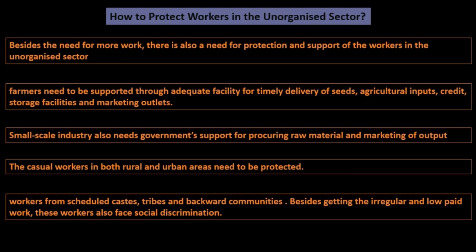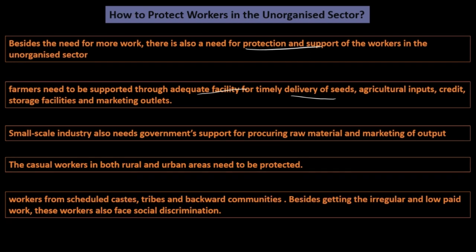To stop exploitation of workers in the unorganized sector, besides creating more work there is a need for protection and support. Farmers need facilities for timely delivery of seeds, agricultural inputs, credit, storage, and marketing outlets. Small-scale industries need government support for raw materials and marketing. Casual workers in rural and urban areas need protection; workers from scheduled castes also face social discrimination in addition to irregular payment.